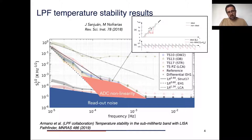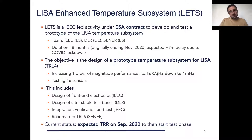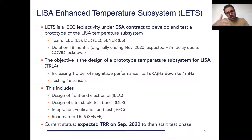But for LISA this is something we need to take into account, because LISA will go down to 10⁻⁴ Hz. So LETS is precisely a project to address these issues. It is a funded activity to develop and test a prototype of the future LISA temperature measurement subsystem. The team is composed by IEEC, DLR, and Sener.